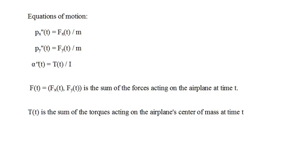The equations of motion for the airplane follow from Newton's second law of motion — force equals mass times acceleration — and Newton's second law for rotation: torque equals angular acceleration divided by the moment of inertia. The equations are: P sub x double prime equals F sub x divided by m, P sub y double prime equals F sub y divided by m, and alpha double prime equals the torque divided by the moment of inertia. F is the sum of all forces and T is the sum of all torques acting on the airplane.